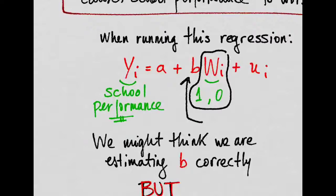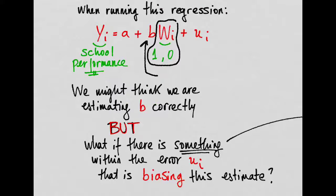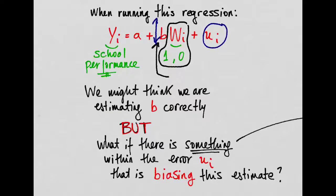Now, we might think that we are estimating B correctly by running this regression. But there is a problem. What if there is something within this error that is biasing this estimate? This means, what if there is something within here that we can't see that is making this B being different than what the true B is?